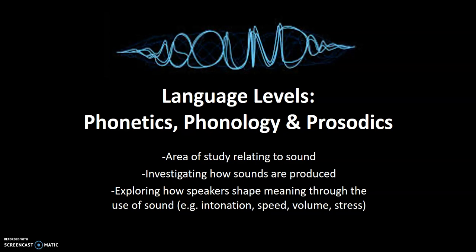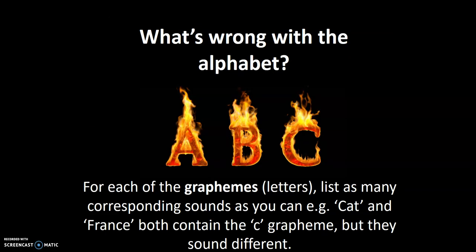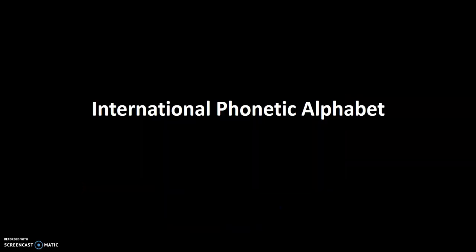For example, a speaker's intonation, their speed, the volume, the stress that they place on their language. Because we're dealing with phonetics and spoken language rather than written language, we need a different way of recording sound — the written alphabet doesn't do sound justice. For example, the letter C sounds very different in the word 'cat' and the word 'France': they both contain the C grapheme, but phonetically they are very different. For that, we need a different alphabet — the International Phonetic Alphabet. The international aspect means it works across all languages, and it's based on sound, representing variety across and within languages.